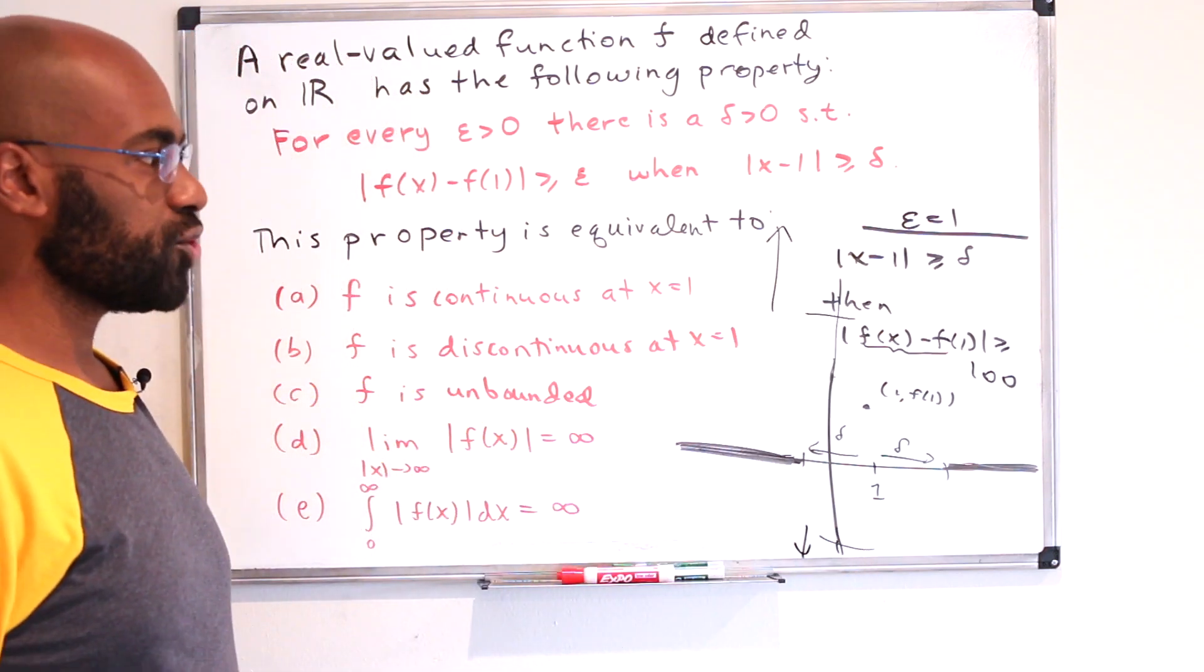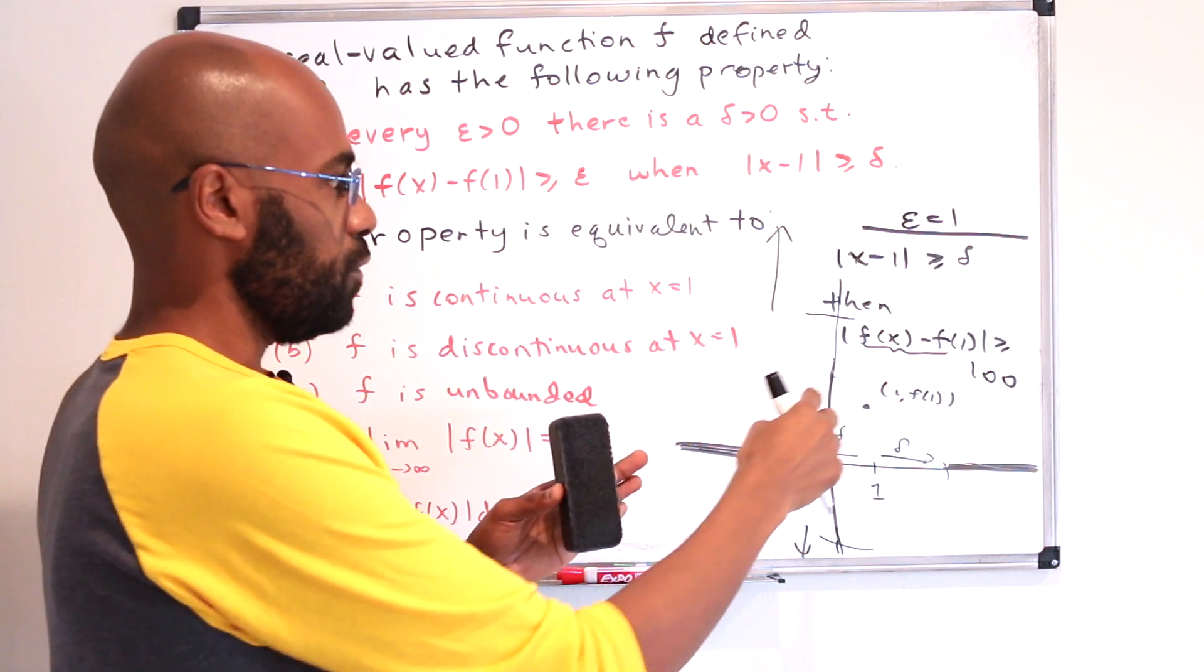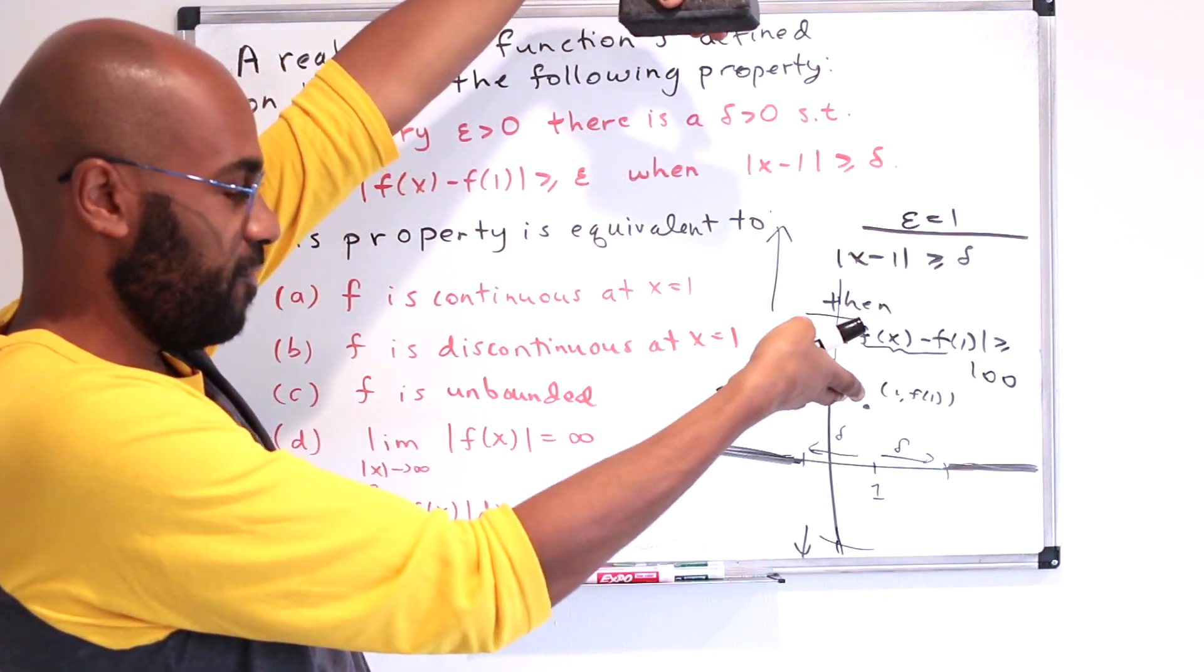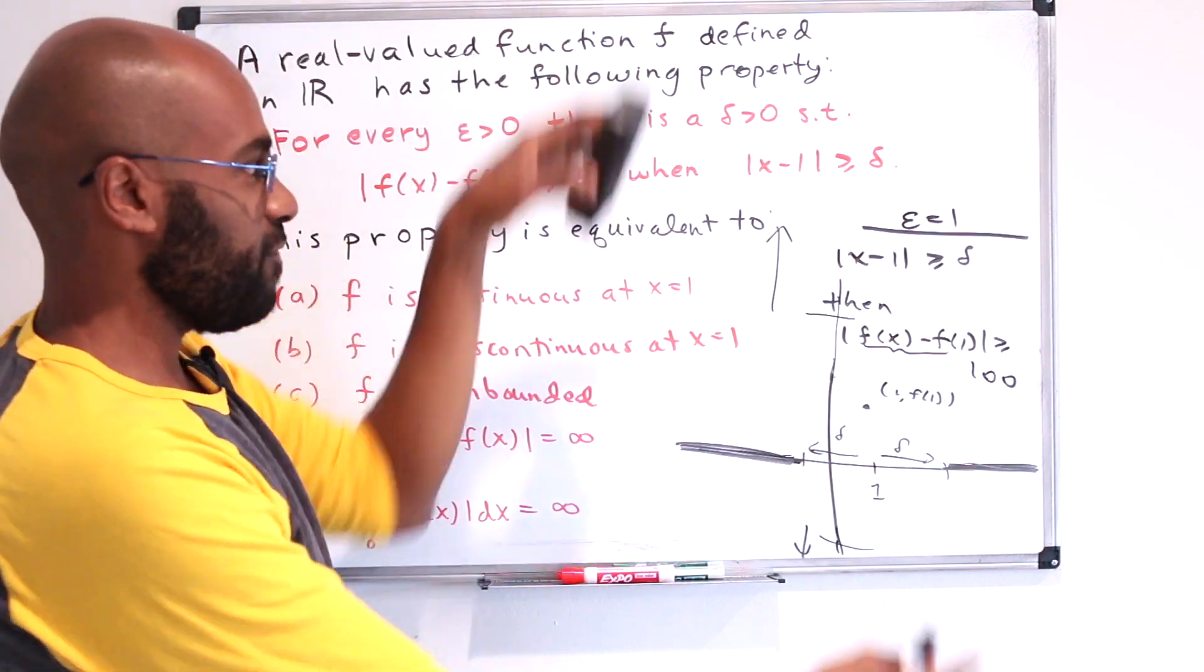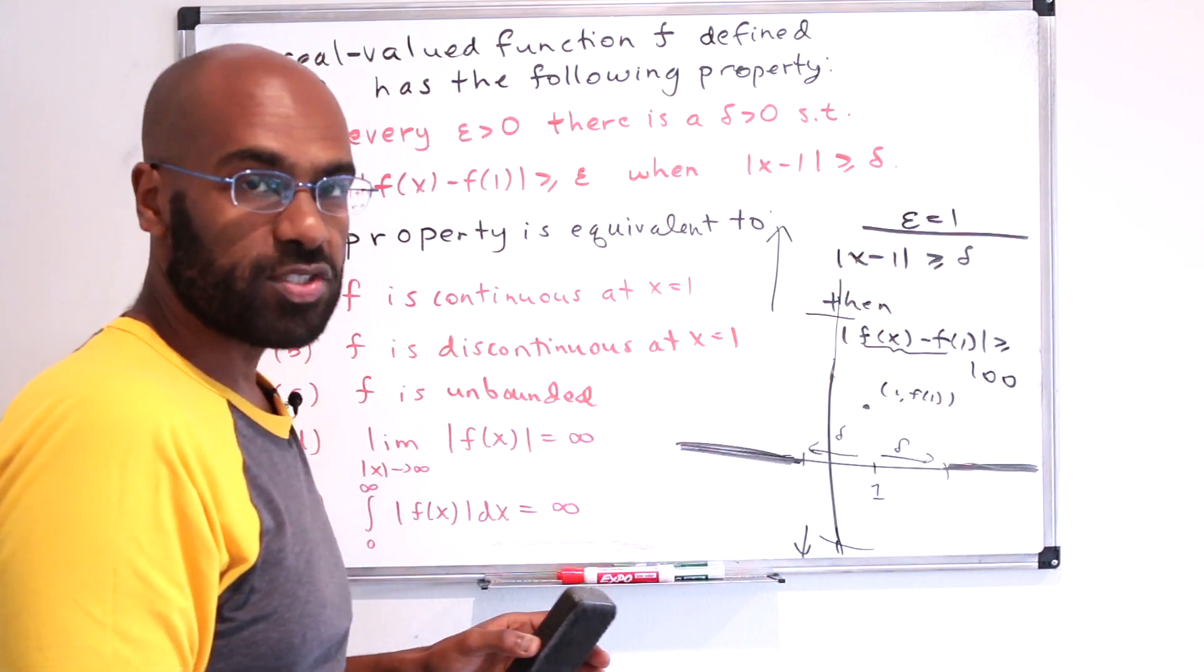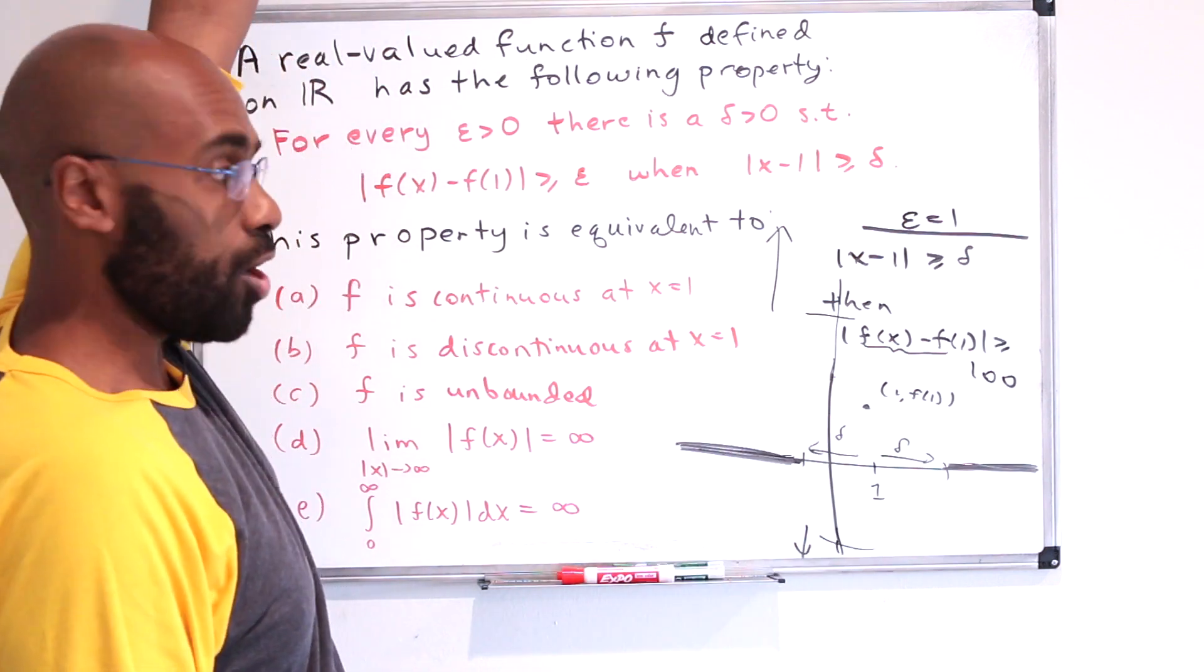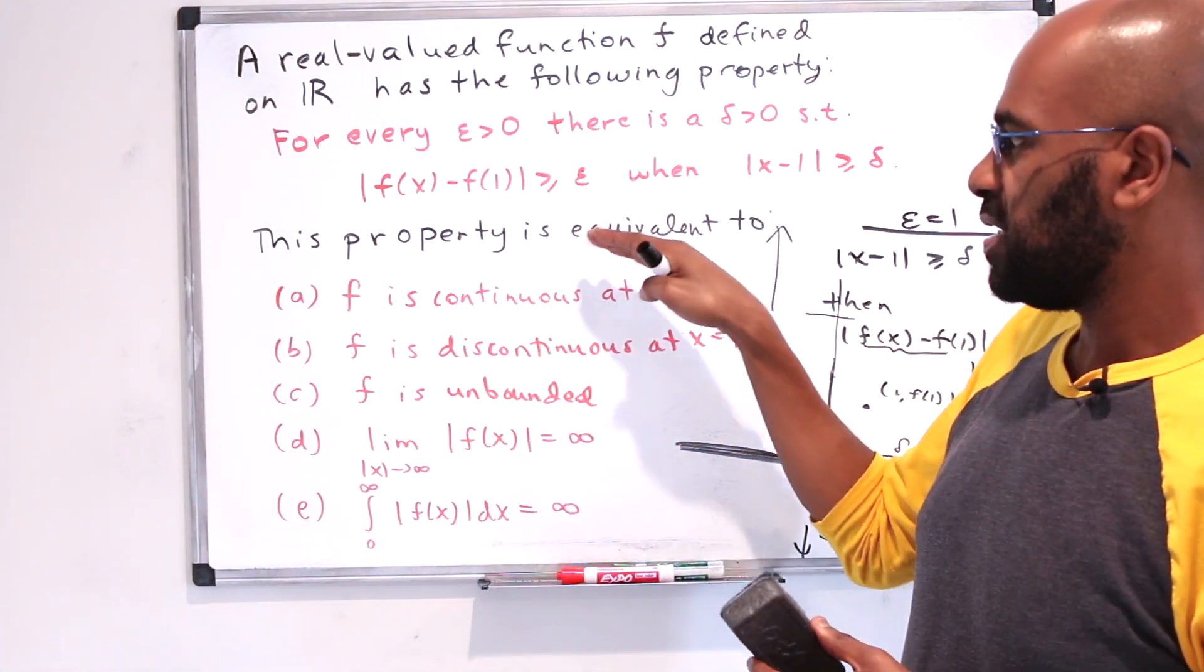So we're seeing from the picture by interpreting directly what this statement is saying, that no matter what value we pick over here, right, let's say we pick 3 million, if we want the values of f(x) to be at least 3 million away from f(1), we can do that by enforcing that x is sufficiently far away from the value 1, right? So as we are getting further and further away from 1, we're seeing that the function is becoming very, very large or very, very small.